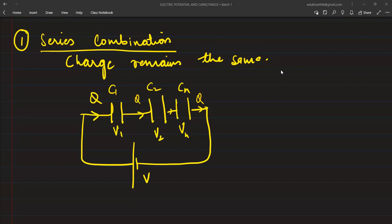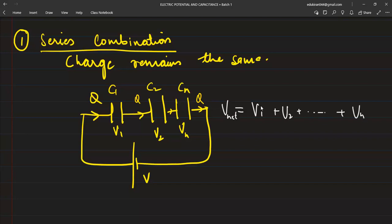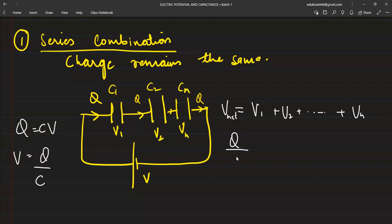So if the charge is remaining the same and the potential is changing, let us take the net potential. What is the total potential? So V_net is equal to V1 plus V2 plus V3 plus V4 up till V_nth. We have studied Q is equal to CV, so what is potential equal to? Charge divided by capacitance.